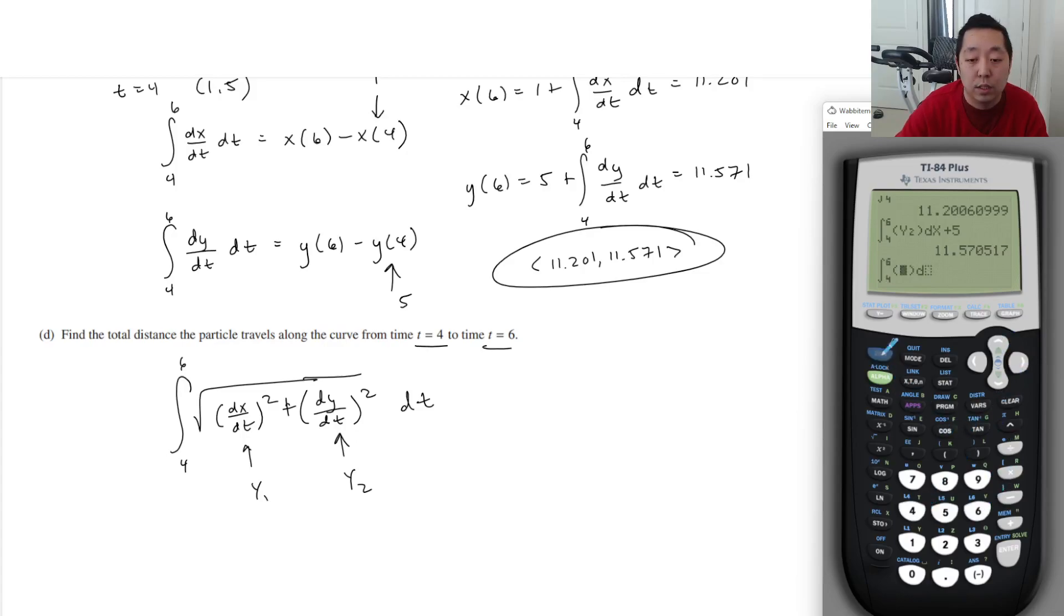So then here I'm going to have to do square root of y1 squared plus y2 squared. That would be distance traveled. So 12.136.